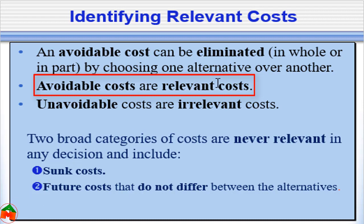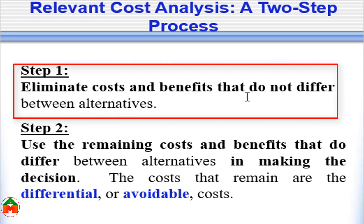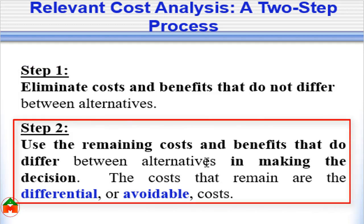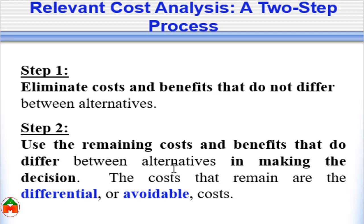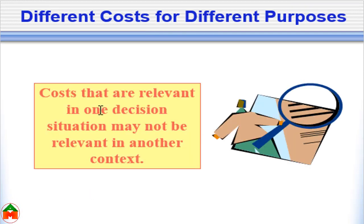The relevant cost is the cost which differs between two alternatives. We can follow two steps to identify relevant costs. The first step is to eliminate costs and benefits that don't differ between alternatives. In the second step, we use only the remaining costs and benefits that do differ between alternatives. Whenever we are doing differential analysis, we should only consider differential cost, avoidable cost, or relevant cost.